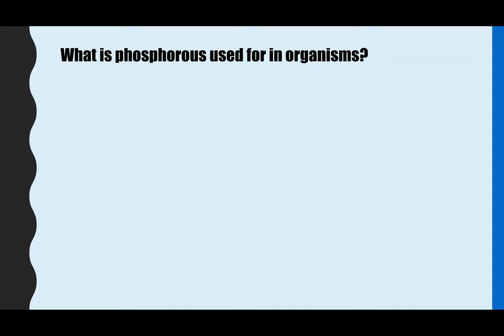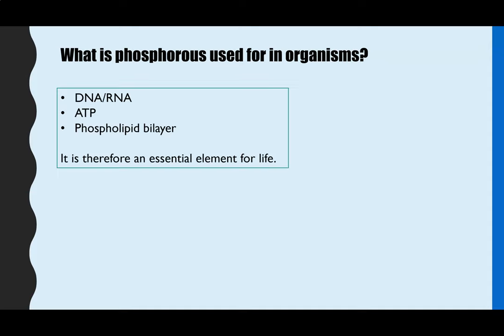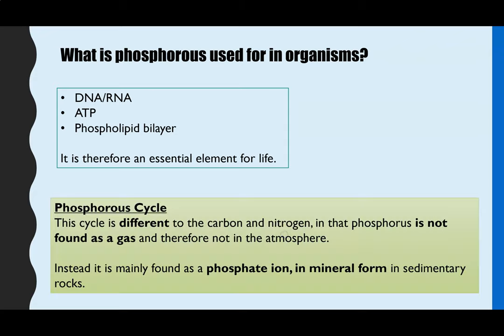If we think back to the biological molecules unit, phosphorus is found in DNA and RNA as a phosphate ion, the same as in ATP. The phospholipid bilayer also has a phosphate group attached to it. So those are four essential molecules for life, which is why the phosphorus cycle is really important.